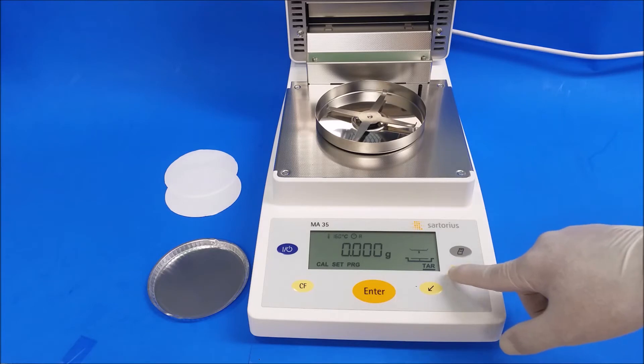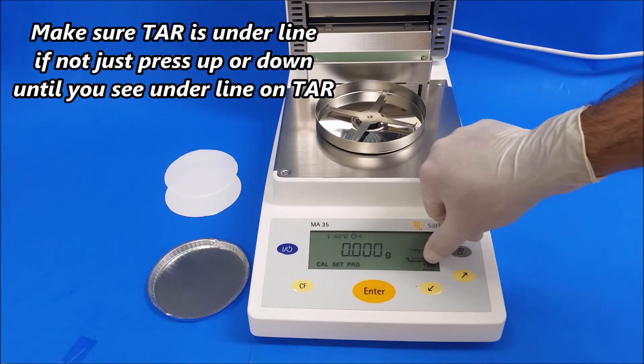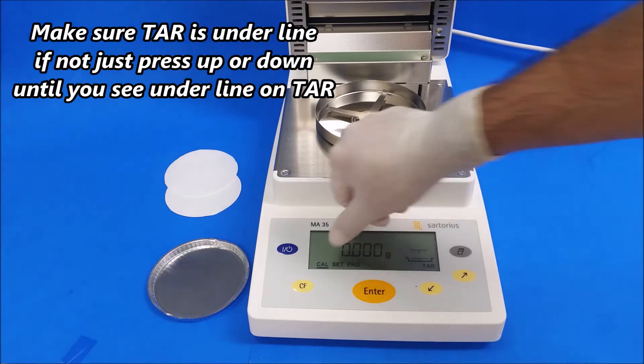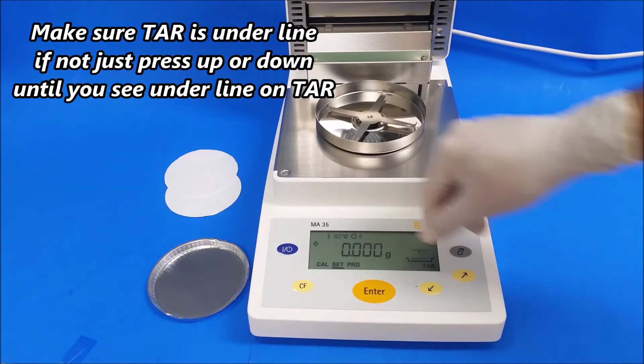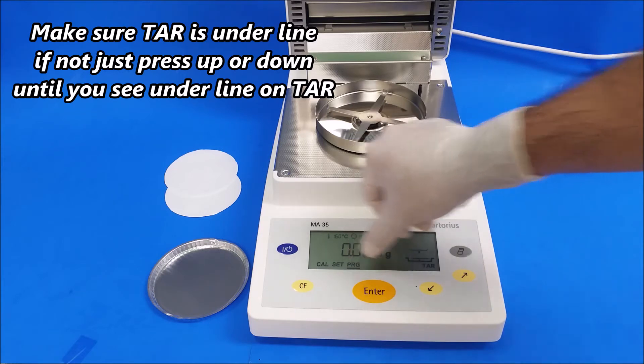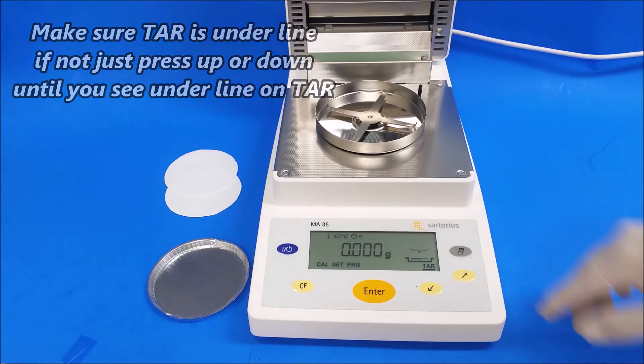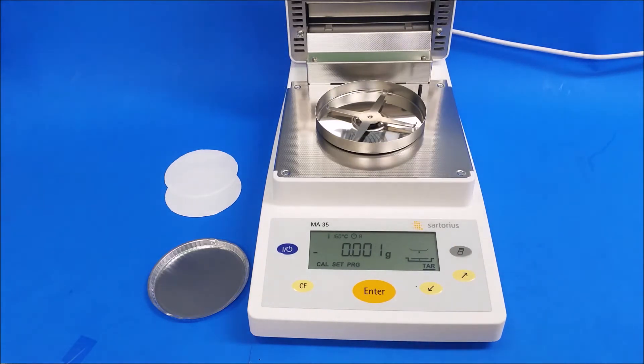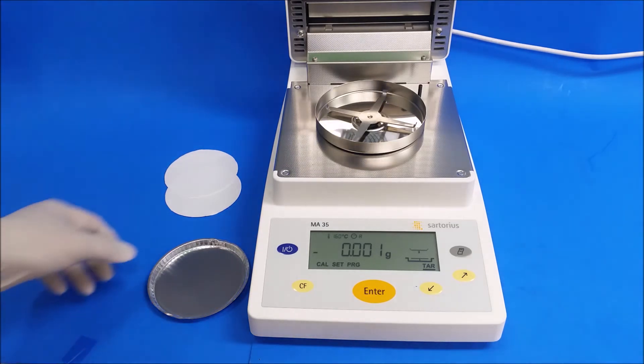Make sure it's underlining tare and set the program you want it to be in tare. Now I'm going to put in an aluminum dish and two fiberglass pads.